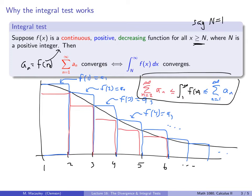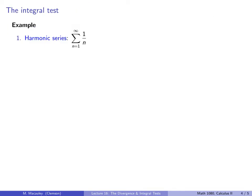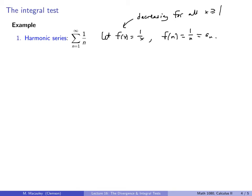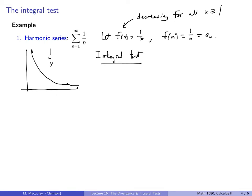Let's apply the integral test to the harmonic series. It's natural to let f(x) = 1/x. Notice f(n) = 1/n = a_n. Also, f(x) is decreasing for all x ≥ 1 — you can take the derivative and see it's negative, or simply recall what 1/x looks like.